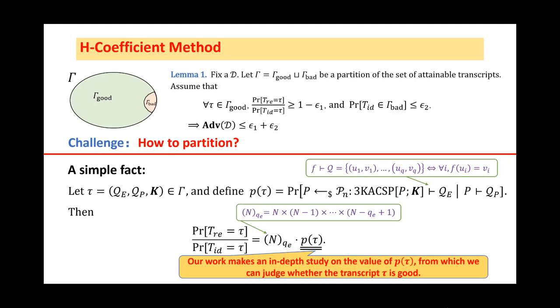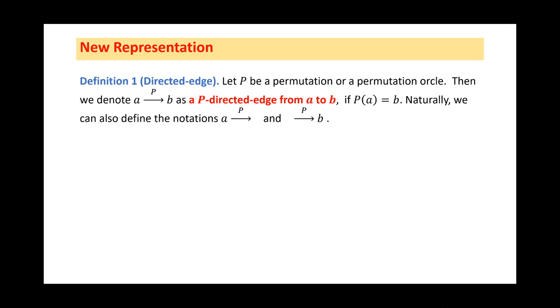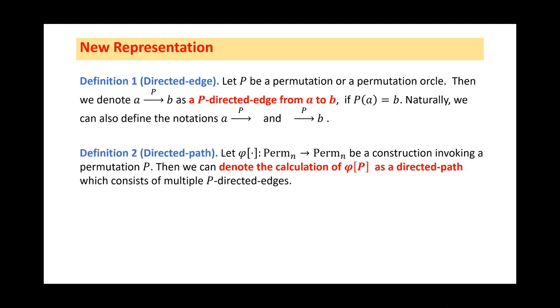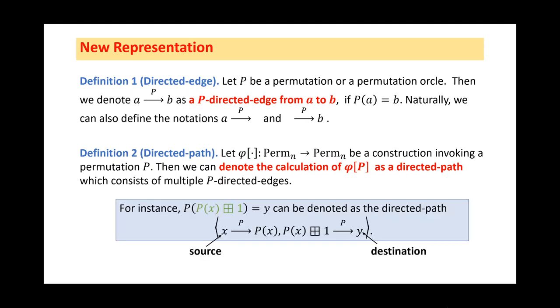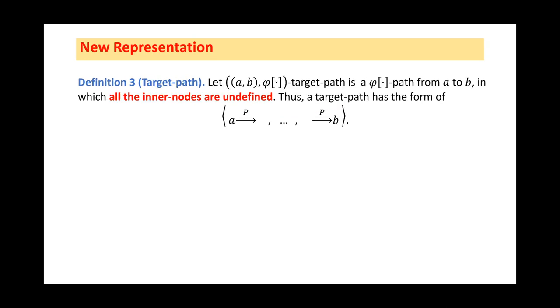To characterize the underlying problems, we will take a quick look at the new representation. In brief, we use directed edges to represent the binary relation under a permutation. Naturally, we can also define a directed path, which consists of directed edges. For instance, this formula can be denoted as a path as follows. In this path, we have two edges, and we call the x and y as the source and destination of this path respectively. Next, let's see a special path called the target path. In such a path, the source and destination are known, but also inner nodes are undefined. Thus, the target path has a form like this.